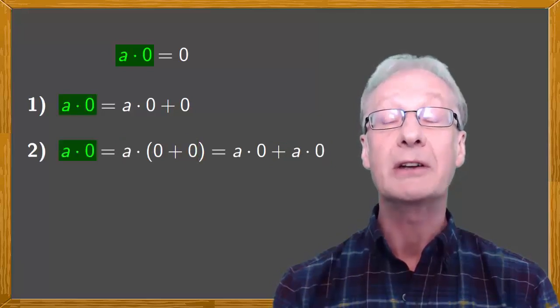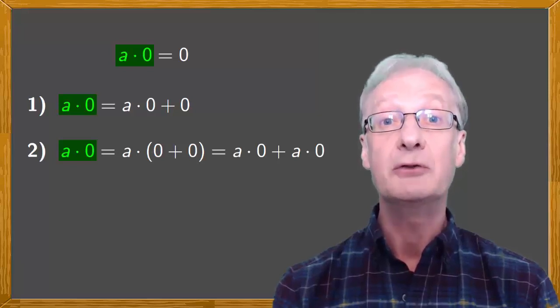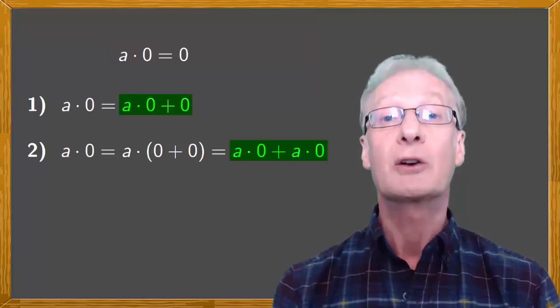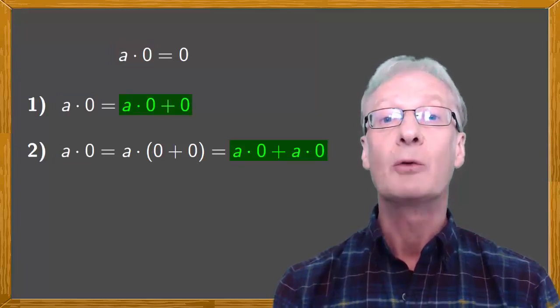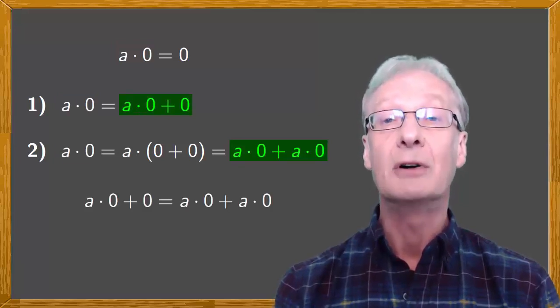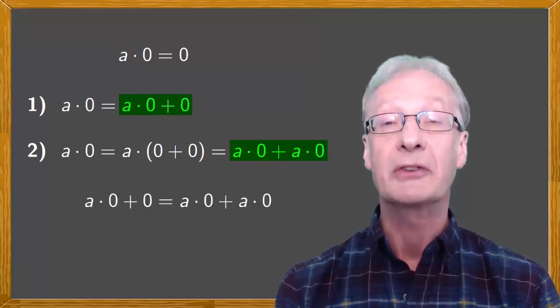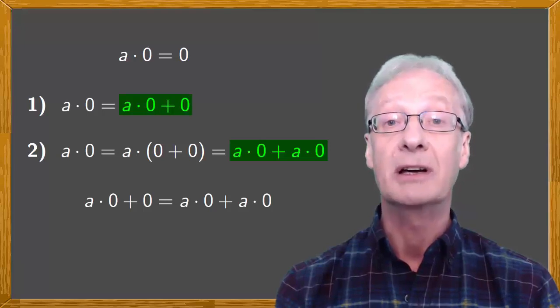So, we've calculated a multiplied by zero in two different ways. Equating these results, we have that a multiplied by zero plus zero is a multiplied by zero plus a multiplied by zero.